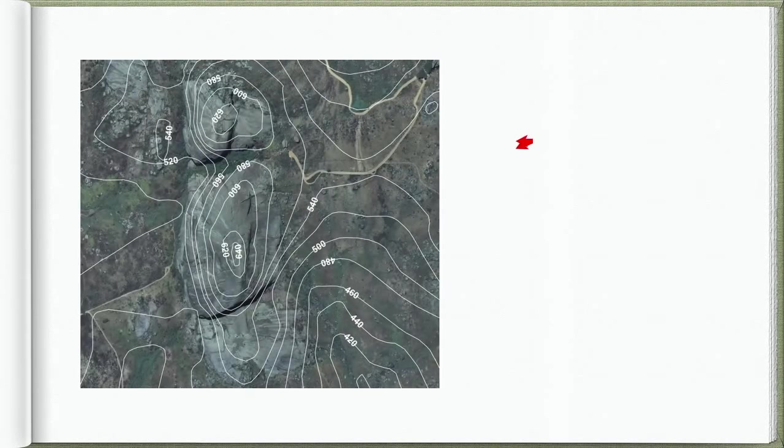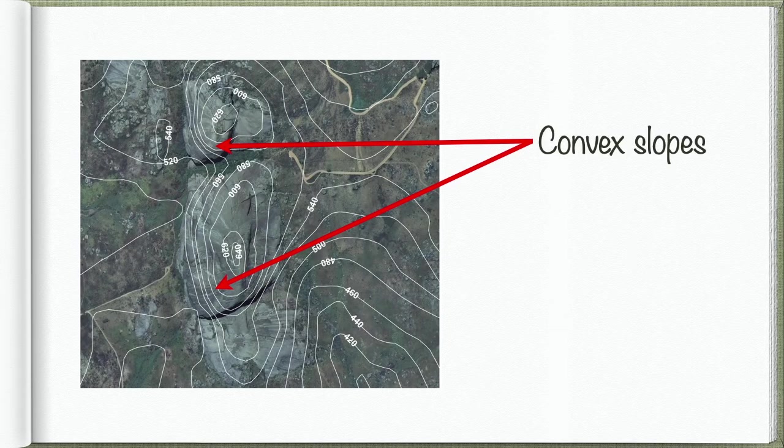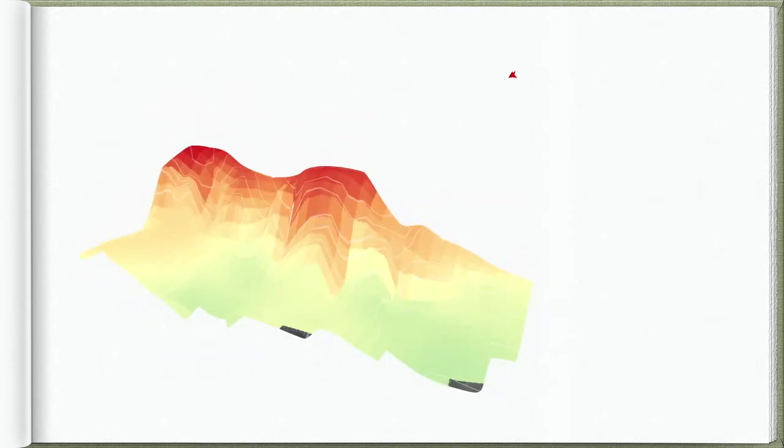And so when we look at the Paarl Rock or the batholith, we see that it's got a dome-like feature. And when we draw the contour lines over the orthophoto map, we begin to see how it's got very steep convex slopes. So it's definitely a dome feature. When we look at the digital elevation model, we can clearly see the domes. So we see it in 3D, so it's a rounded feature.